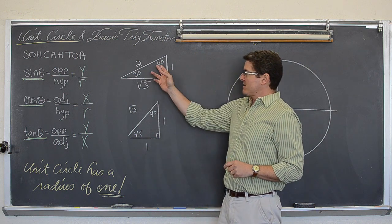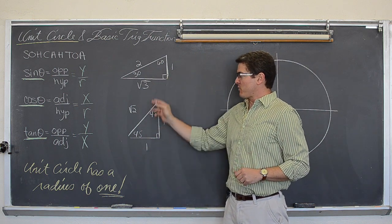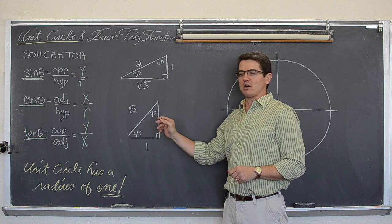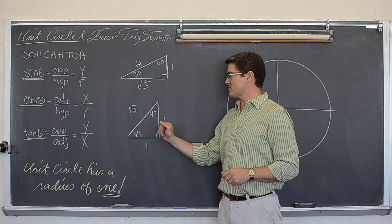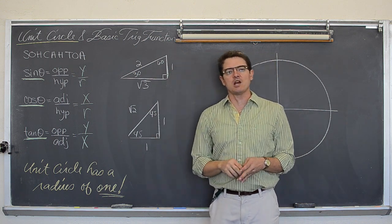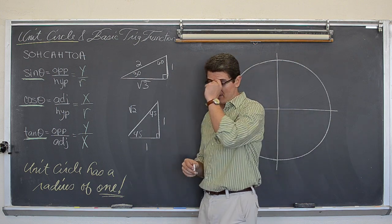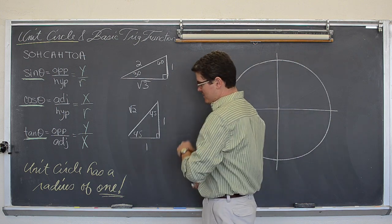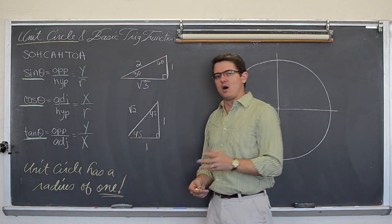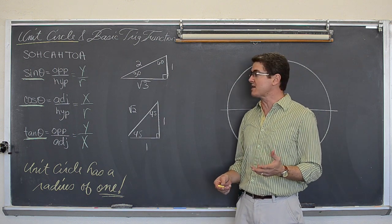I also said that the unit circle is mostly comprised of values that come off of these two triangles — the 30-60 triangle you learned from geometry and the 45-45 triangle. Now because of this, the definition of the unit circle having a radius of one means some really cool things happen.